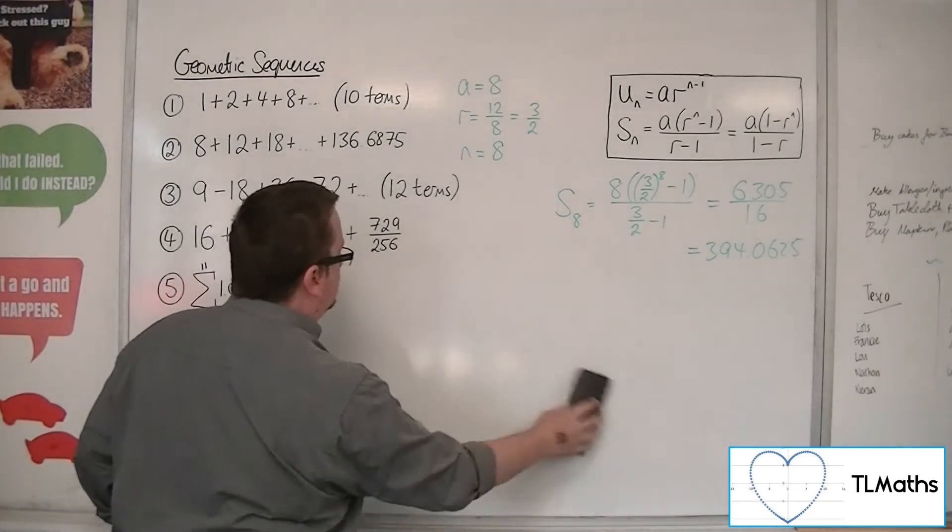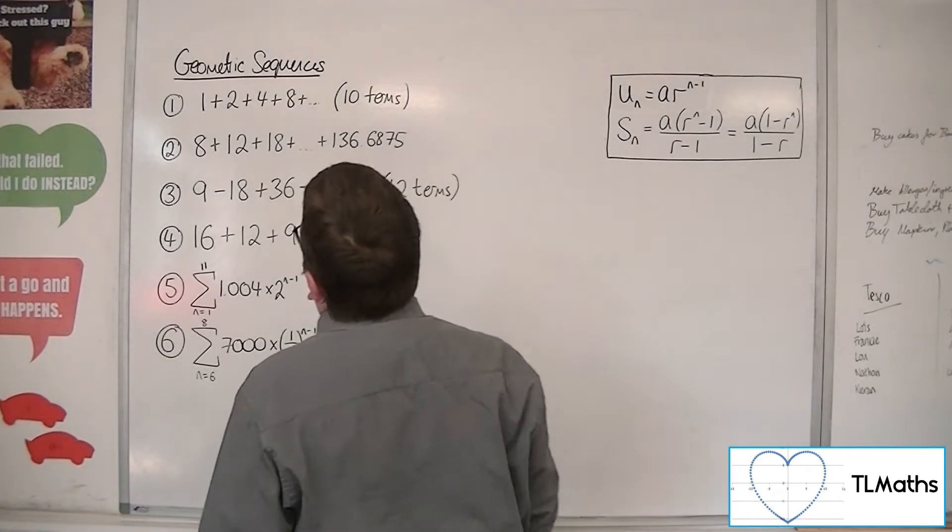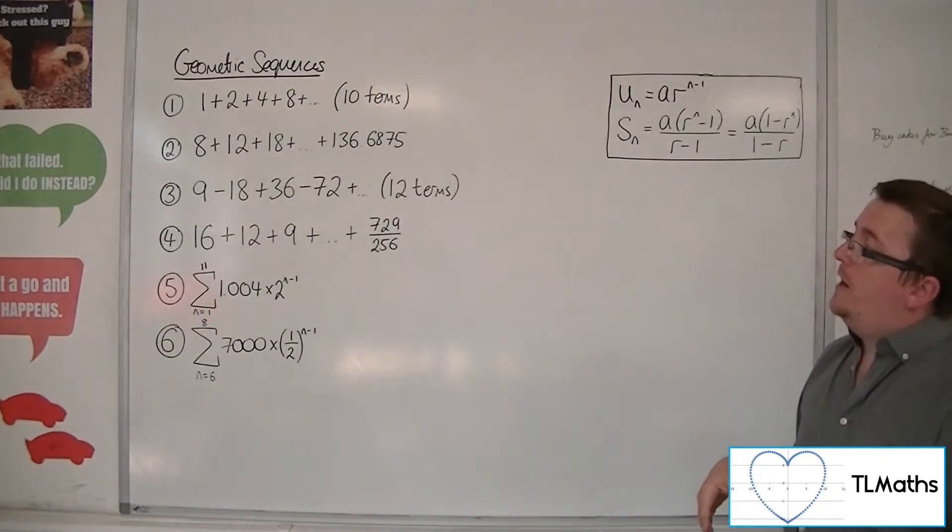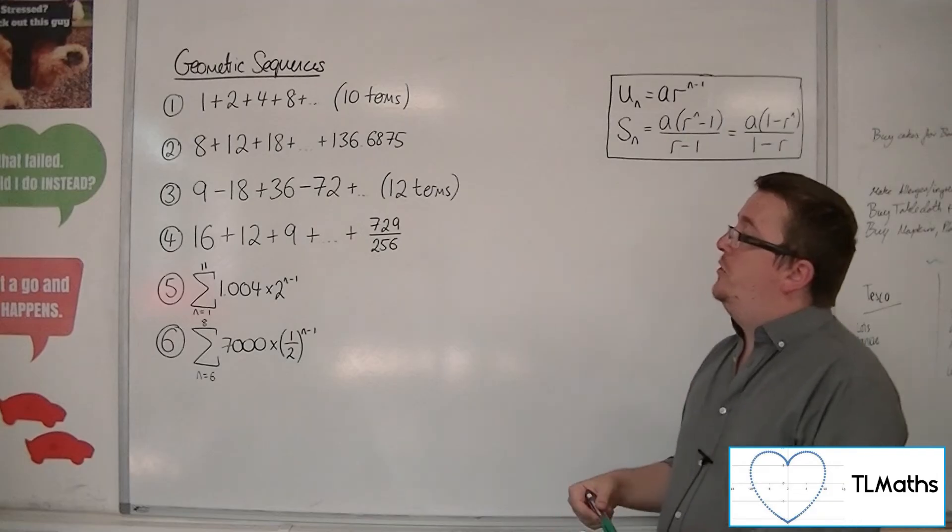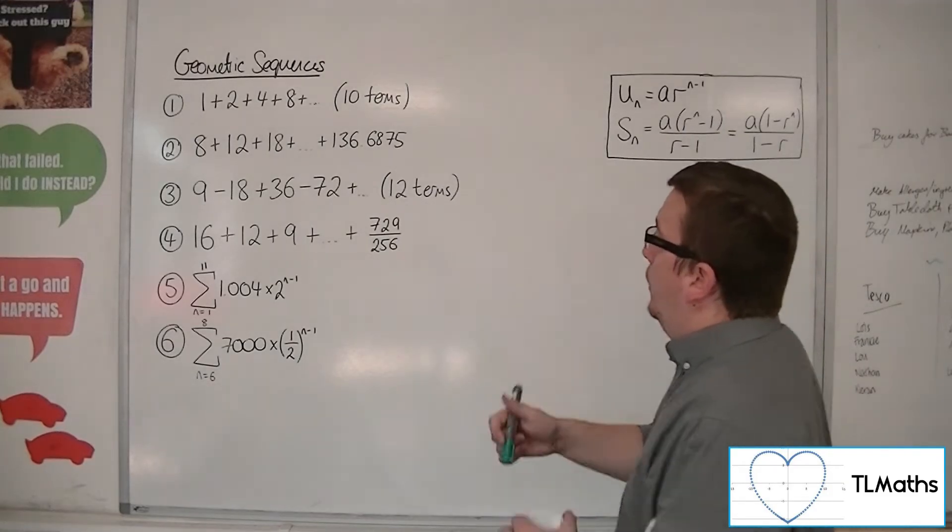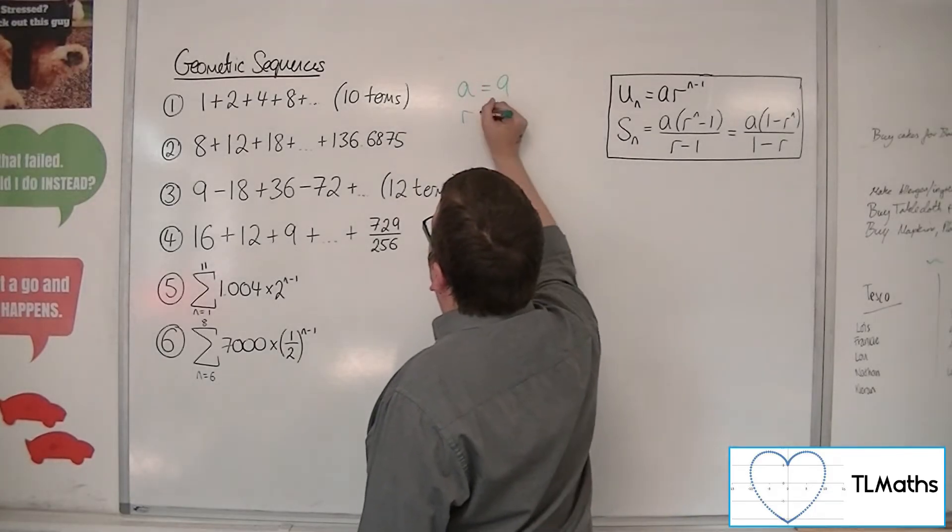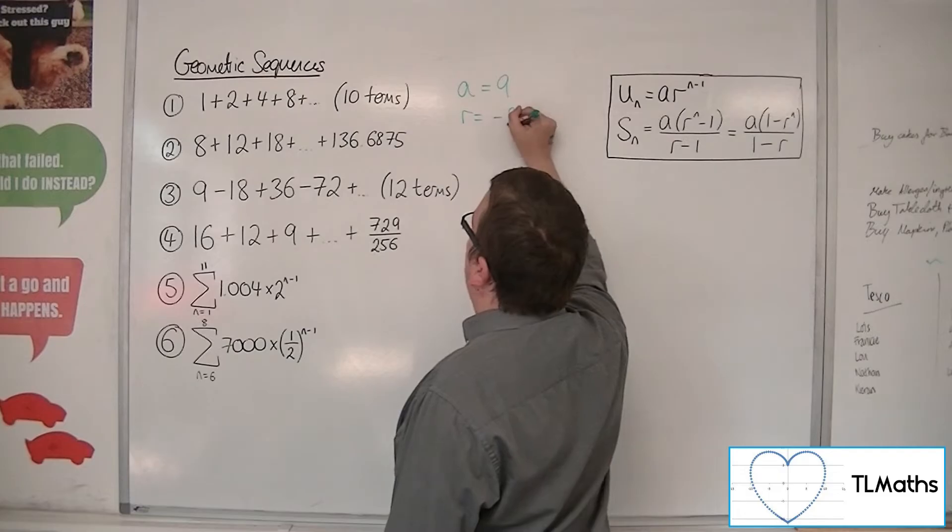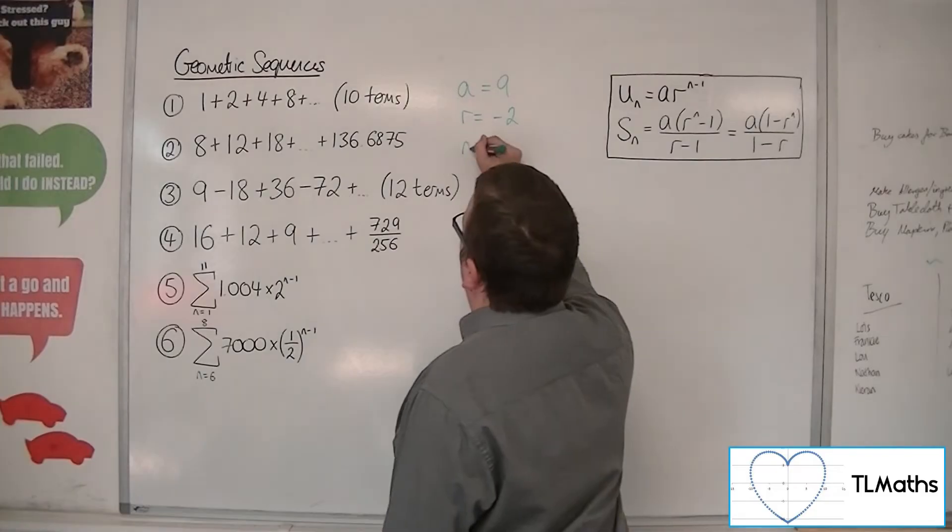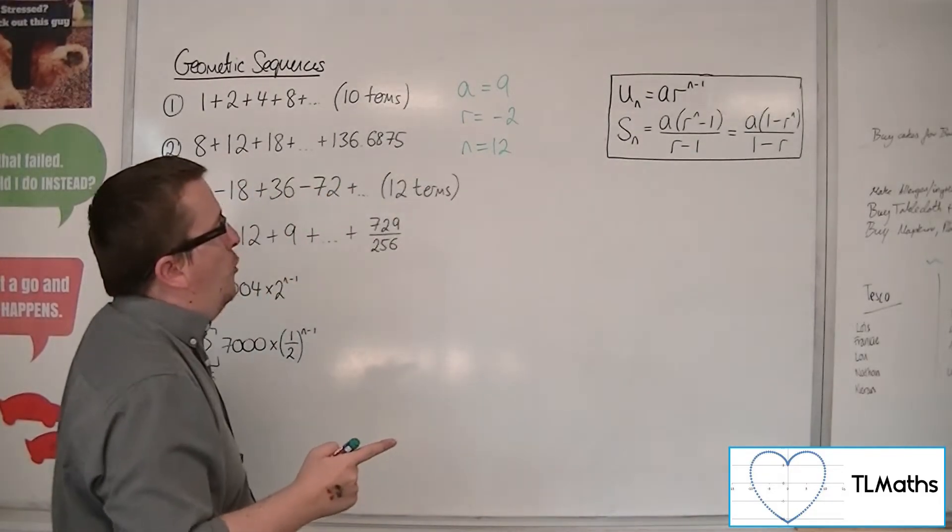Moving on to number 3, we've got 9, take away 18, plus 36, take away 72, plus, etc., up to 12 terms. So we can identify a as 9, the common ratio as minus 2, multiplying by minus 2 each time. We already know n as well, so we can go directly into one of these two formulas.